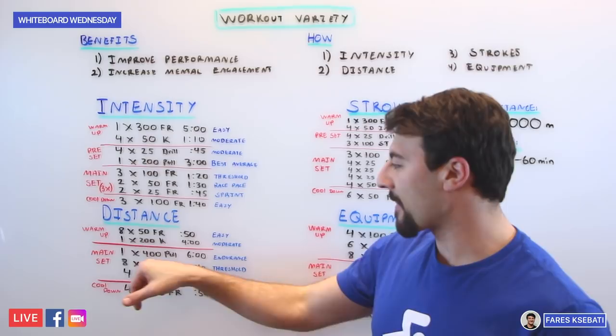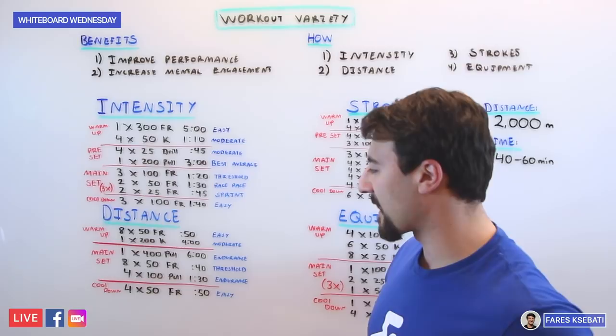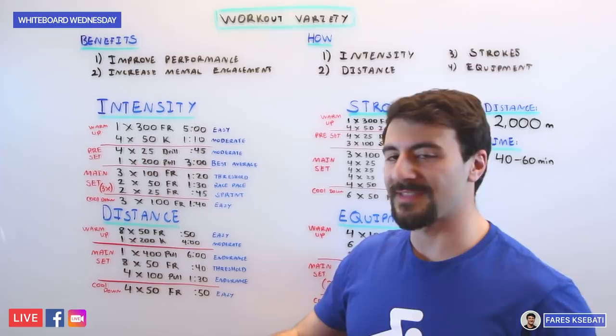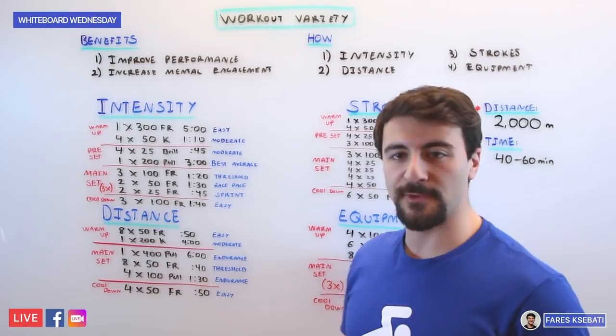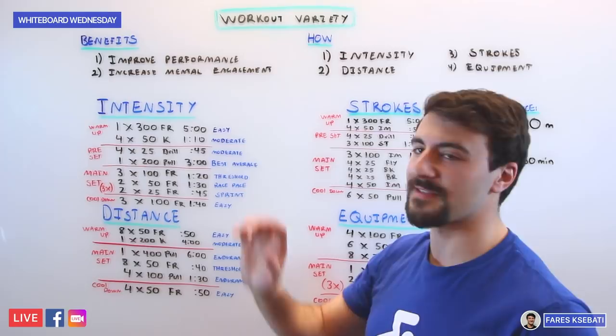Now if we look at the main set, really we're focused on the aerobic zones going from endurance to threshold, but the distance is changing dramatically. If you notice this workout, we're changing the variety by distance, so we go 400, we're going 50s, we're going hundreds, we're going to cool down with 4x50s freestyle on the :50 in the easy energy zone. So this workout very different from the intensity variety workout. In this workout we're really focused on changing up the distance going from 400 all the way down to a 50.